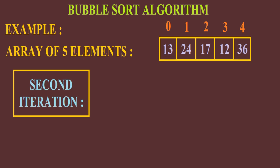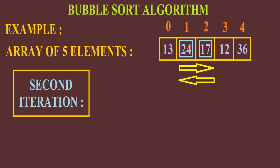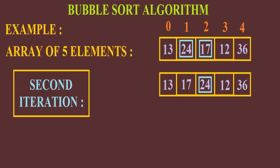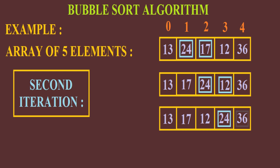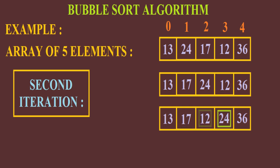Now in the second iteration, 13 will be compared to 24. Since 13 is less than 24, they will stay at their original positions. Now 24 will be compared to 12, and as 24 is greater than 12, they will interchange positions. Then 24 will be compared to 36 and as 24 is less than 36, both of them will remain in their original positions. So after the second iteration, the array looks like this: 13, 17, 12, 24 and 36.